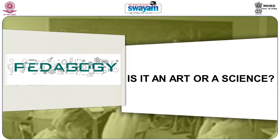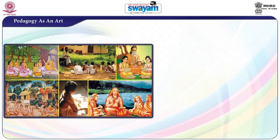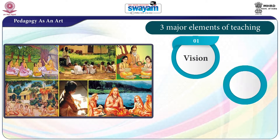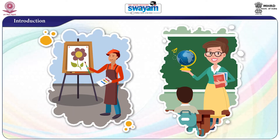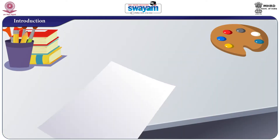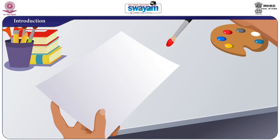Now the question is: pedagogy — is it an art or a science? Let us understand pedagogy as an art. From ancient times, education was assigned the status of art. Education was considered as an art of teaching, or the art of leading children to knowledge acquisition. Teaching requires three major elements: vision, creativity, and decision making. Let us understand the fact that teaching is an art with an analogy — the work of a painter and that of a teacher.